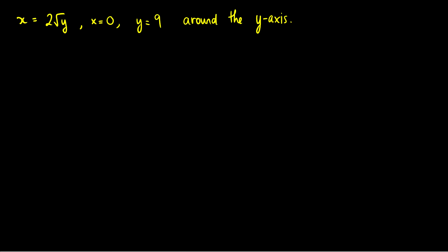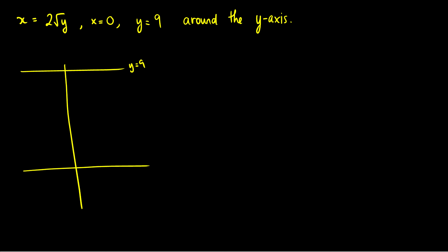We have one more question: x equals 2 root y, x equals 0, and y equals 9, rotating around the y-axis this time. So x equals 2 root y: when y equals 9, we get 2 times root 9 equals 6, and when y equals 0, x equals 0. The curve looks like a cone that opens upwards instead of to the right. We then rotate this around the y-axis, getting a cone that faces upward.